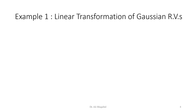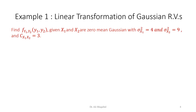Here is a numerical example — Example 1. The linear transformation of Gaussian random variables is given. We need to find the joint output PDF given the joint input. The inputs have zero mean, so X-bar1 and X-bar2 equal zero. We are given the variances for the inputs and the covariance between them.